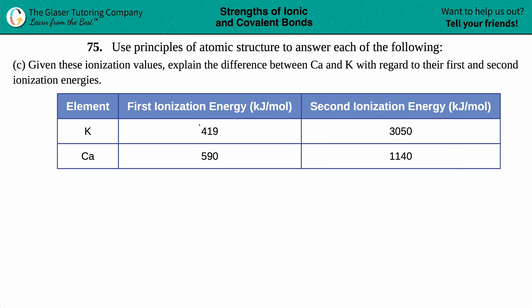Number 75, use principles of atomic structure to answer each of the following. Letter C says: given these ionization values, explain the difference between calcium and potassium with regard to their first and second ionization energies. The best way to explain this is by drawing calcium and potassium.